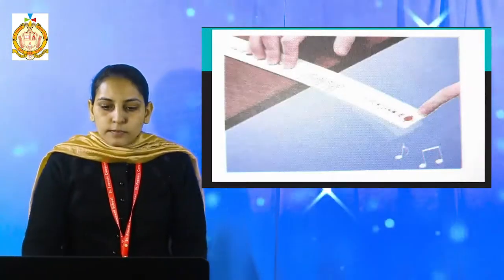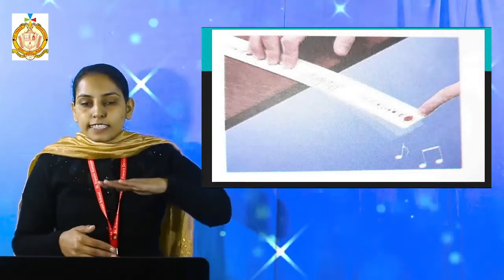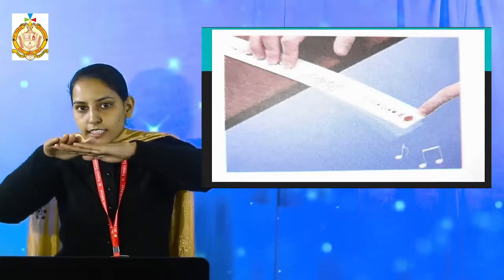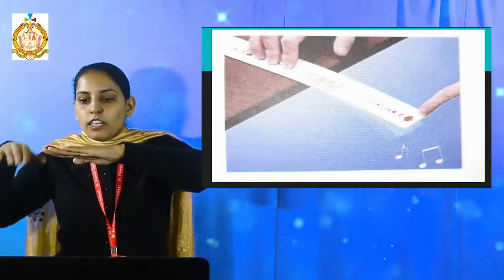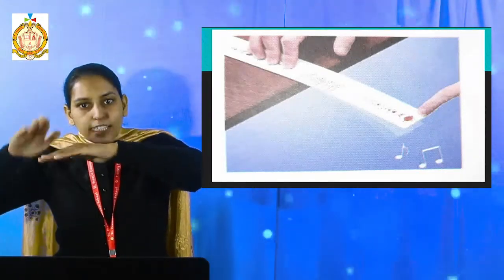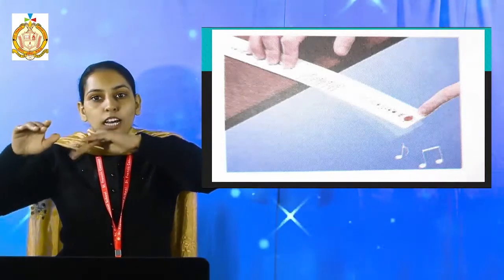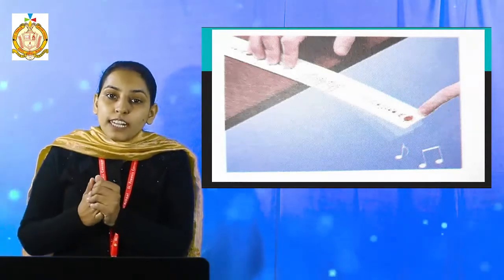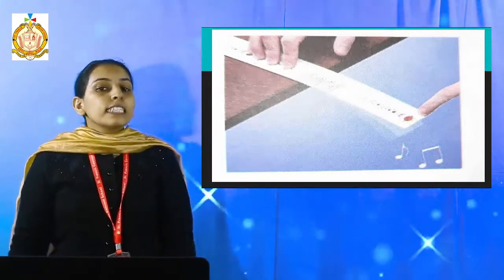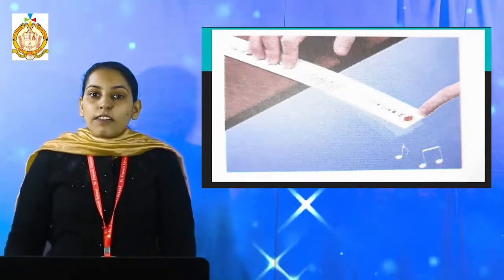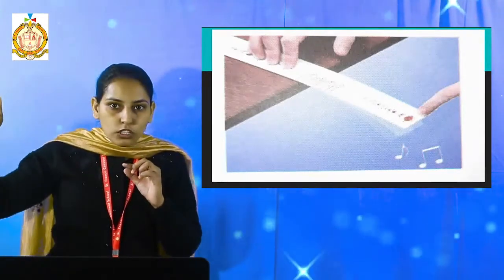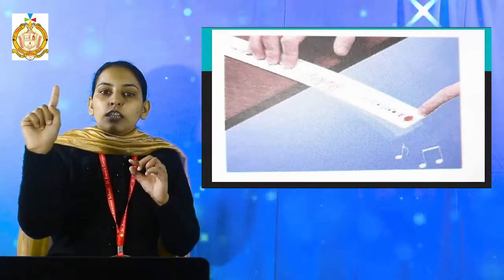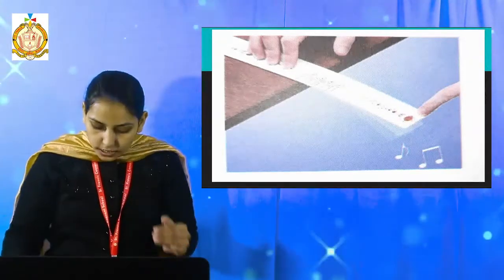Let us understand with the help of an example. Let us take a scale — half of the scale on the desk and the other half out from the desk. Once we flip the scale, it will produce vibration, and that vibration produces the sound. In the same way, a ceiling fan can produce sound. When we switch on the fan, it slowly comes to its original position, and then sound is produced.